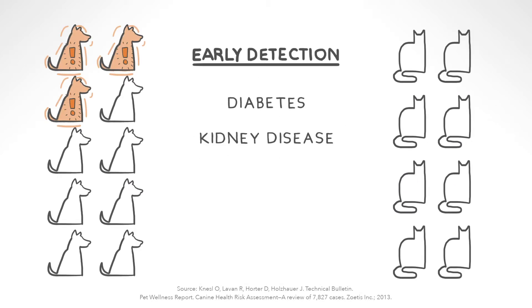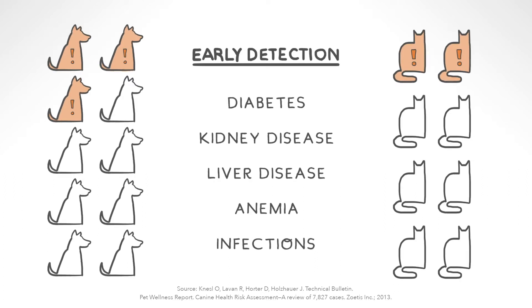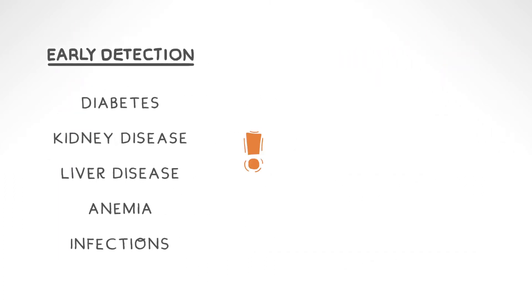Abnormal results are found in around 30% of apparently healthy dogs and 25% of apparently healthy cats. But the good news is, many issues, when caught early by wellness testing, can be treated successfully and cost-effectively.